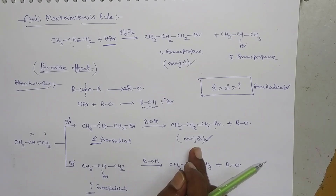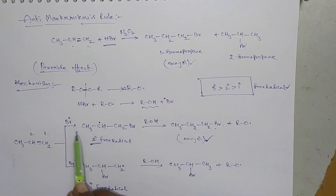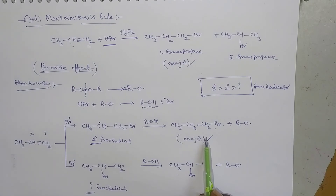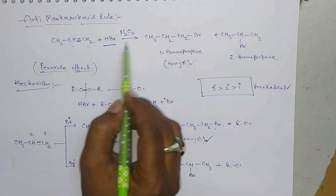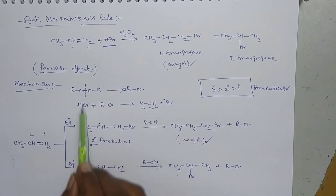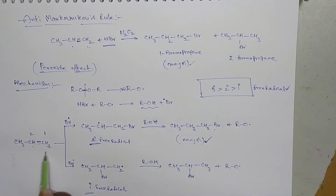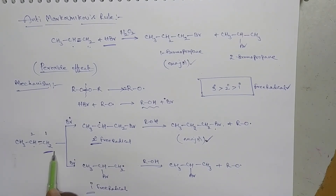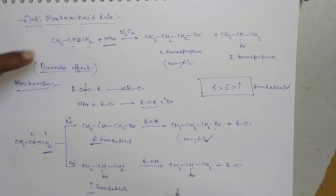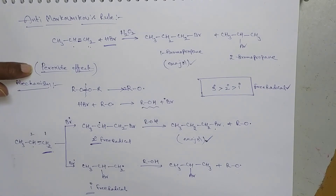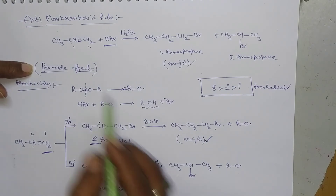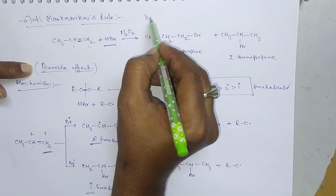So we can conclude: the negative part (Br) gets attached to the unsaturated carbon with the higher number of hydrogen atoms — that is anti-Markovnikov's rule. This reaction takes place only in the presence of peroxides, which is why it is called the peroxide effect. It is also known as the Kharasch rule.